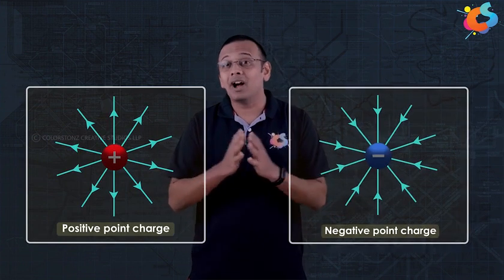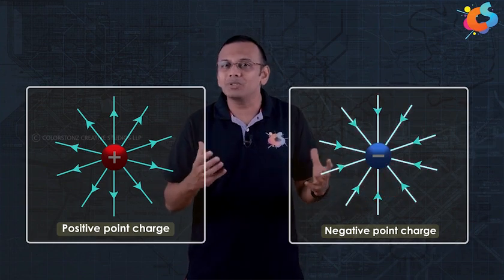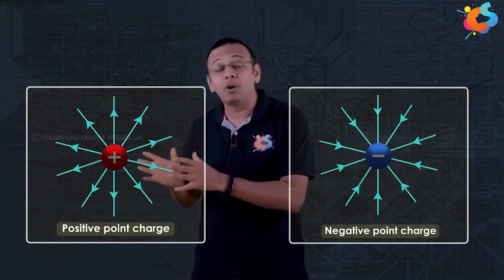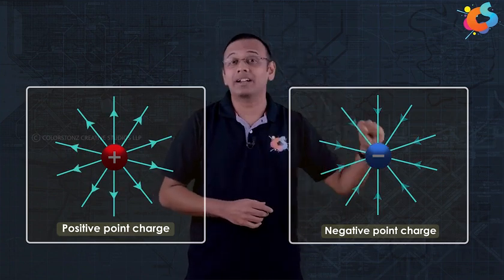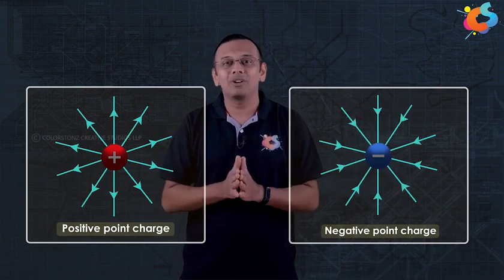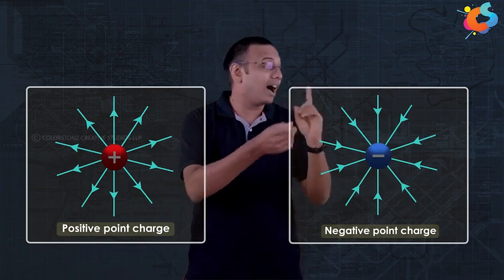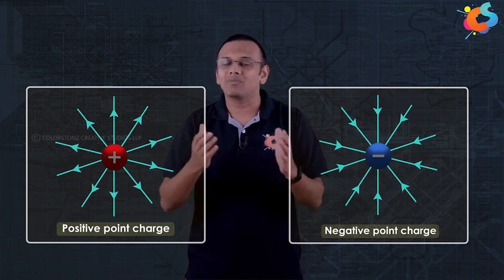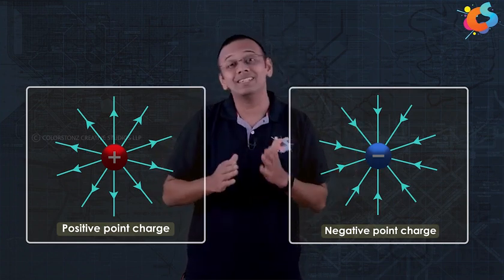Suppose that instead of a positive point charge, we now have a negative point charge. The field produced by a negative point charge will be similar to the field produced by a positive charge, but with one major difference. The field of a positive charge is repulsive or radially outwards, whereas due to a negative charge it will be attractive or radially inwards. Therefore, the electric field lines look exactly the same as that of a positive charge, but the arrows are now switched — they point in the radially inward direction, starting from infinity and terminating on the negative point charge.